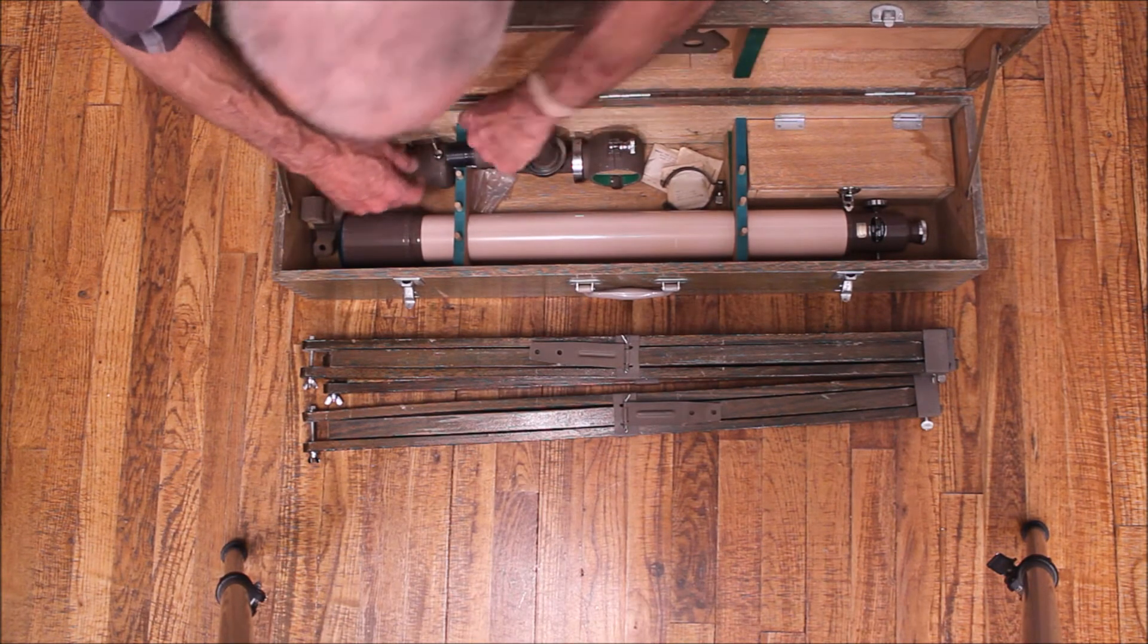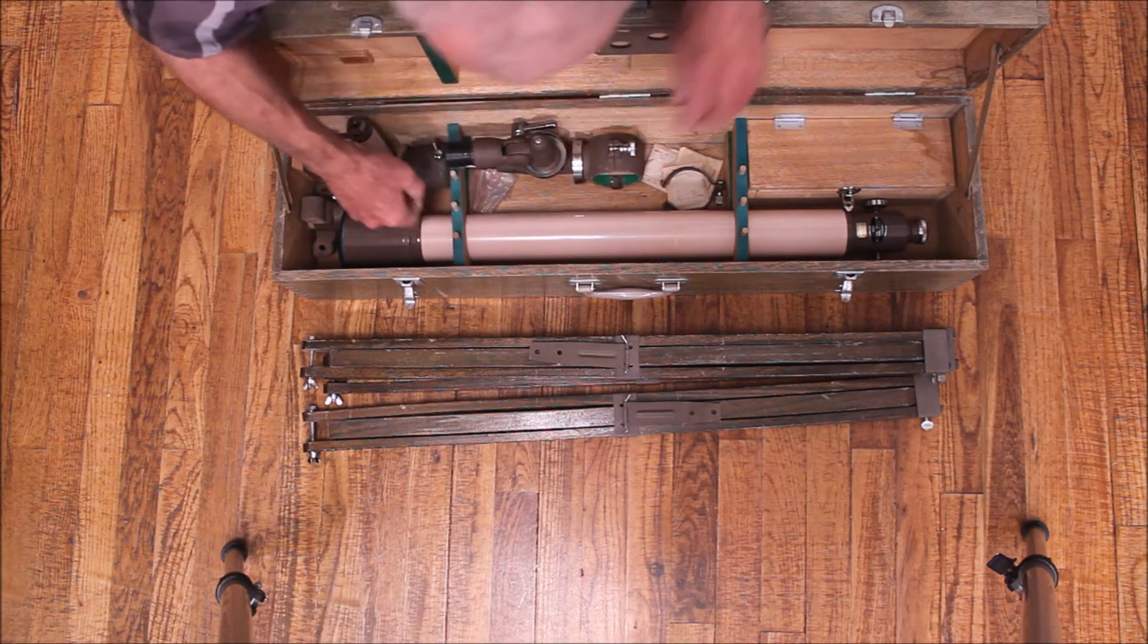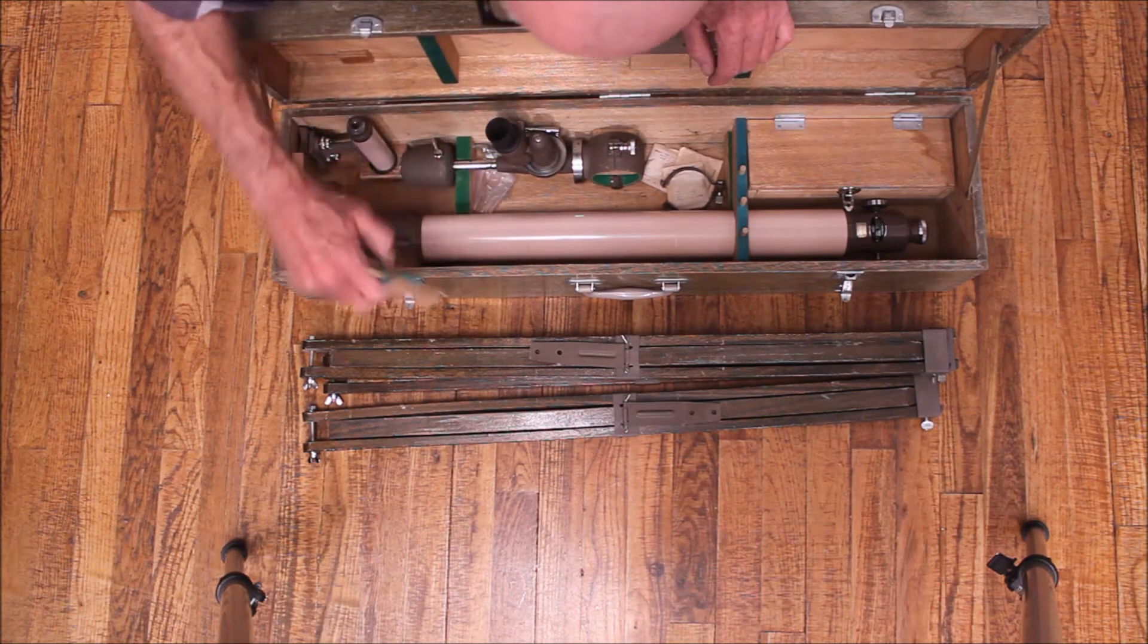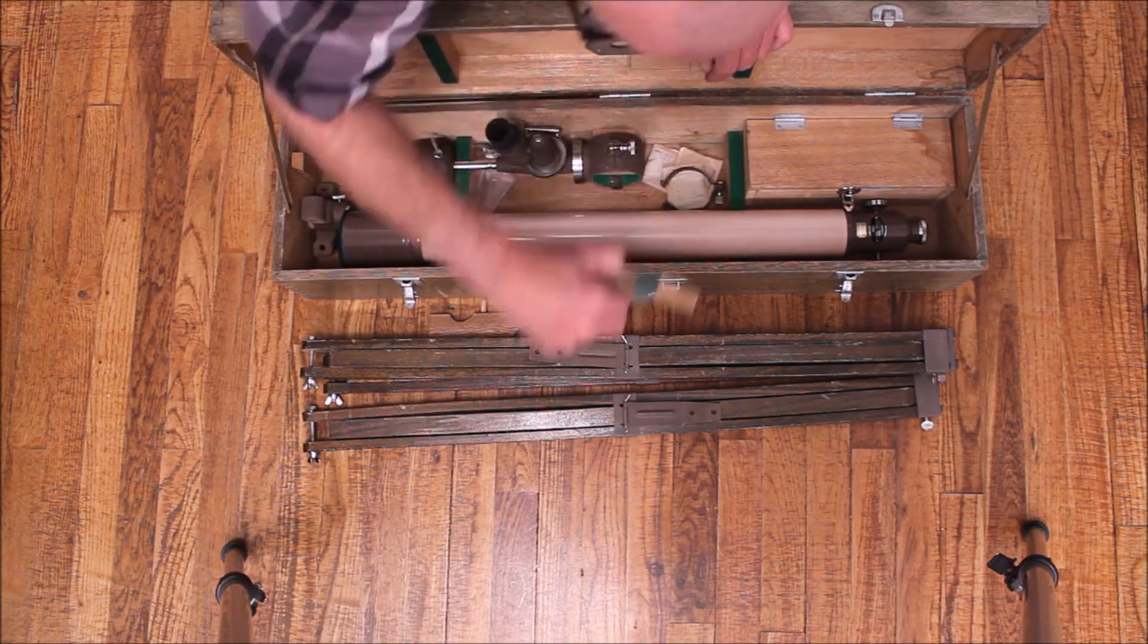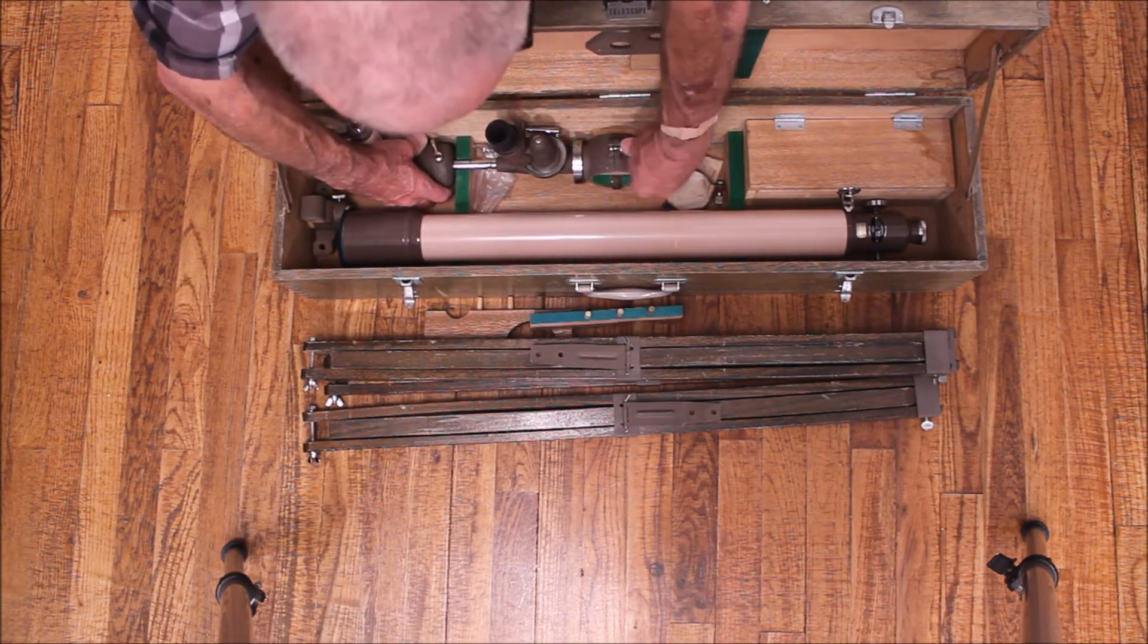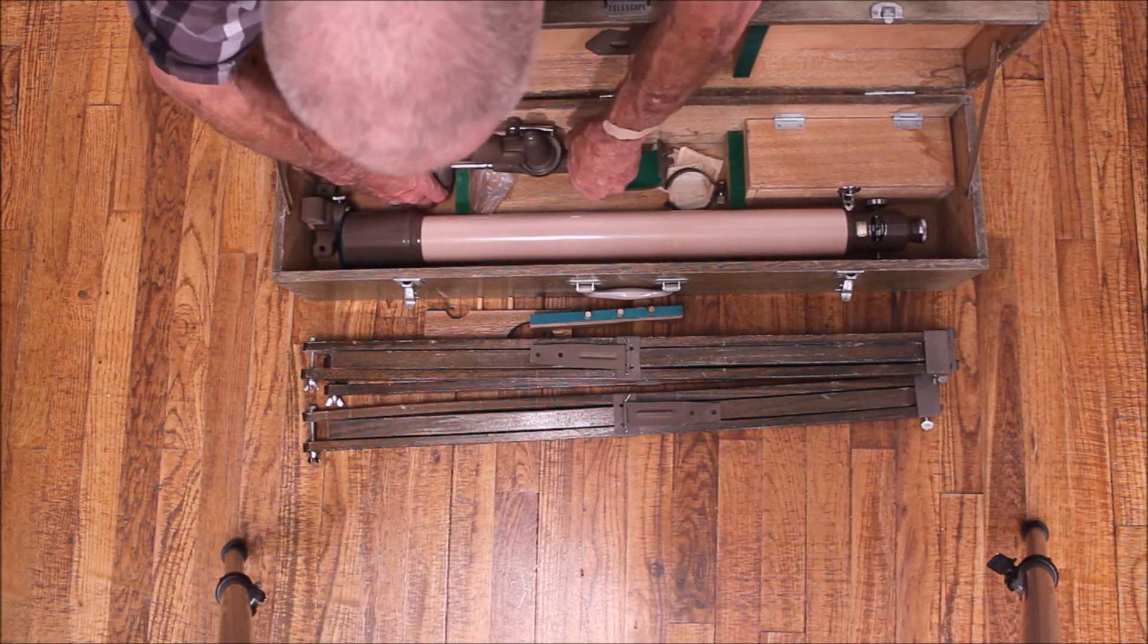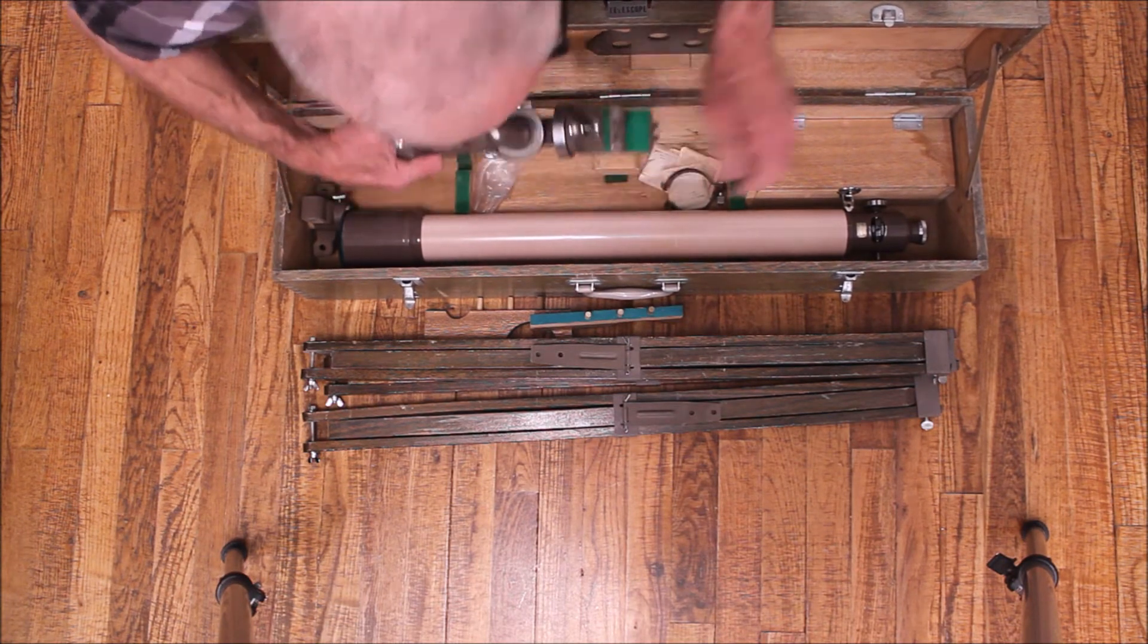The finder is stored over here. This is where the mount goes. And these little brackets are locked in there. So once you remove that, pull this out. And that comes the mount.